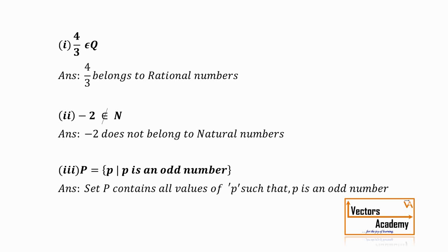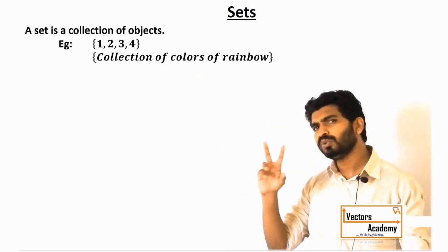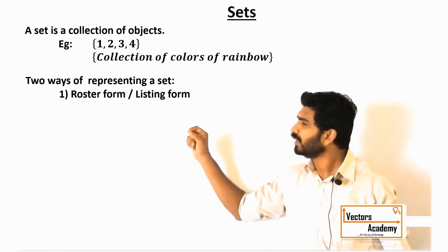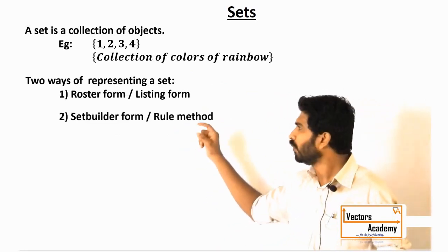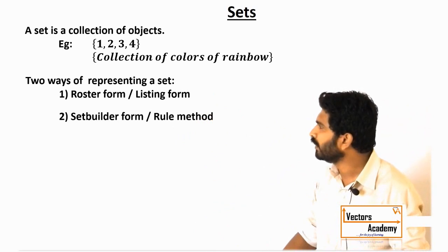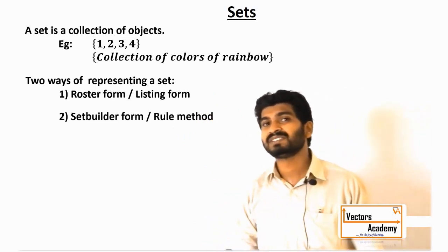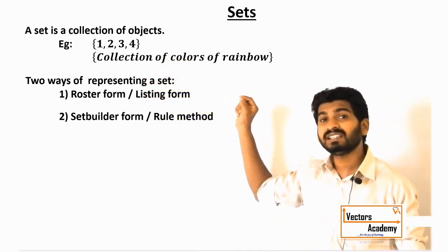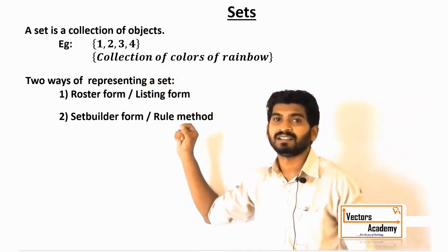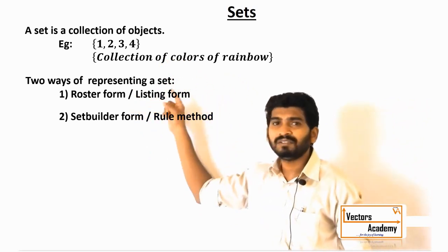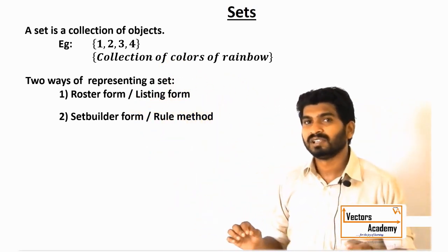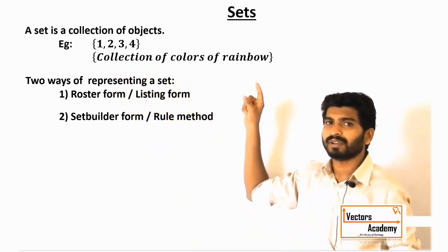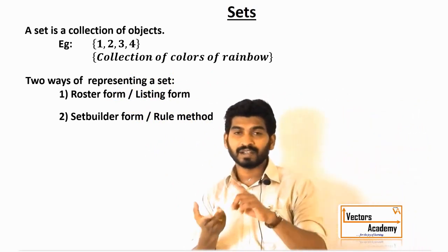There are two ways of representing a set. The first is the roster form, or listing form. The second is the set builder form. In the listing form, we represent the elements which are present in the set — for example, 1, 2, 3, 4. In the set builder form, we don't list the elements; instead we express the rule for the elements, such as the colors in the rainbow — violet, indigo, and so on.